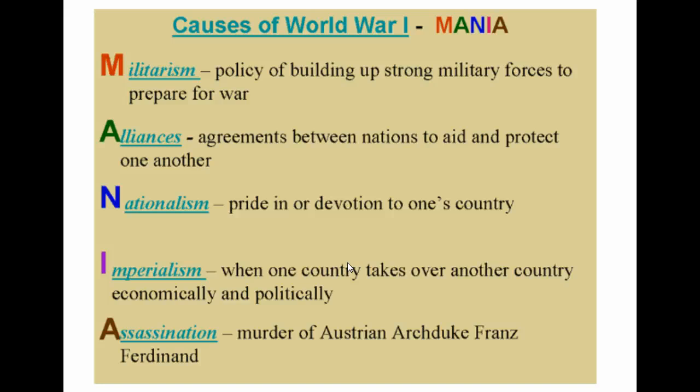And that brings us to the end of how World War I got started. We've got our acronym MANIA: militarism, alliances, nationalism, imperialism, and the assassination of Archduke Franz Ferdinand. The United States is watching and is well aware the war started, but will initially remain neutral. We will talk about the events that lead the United States ultimately into World War I in the next lesson.